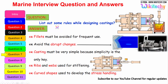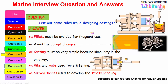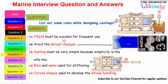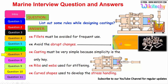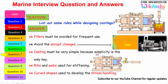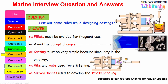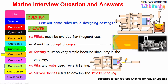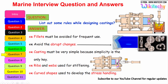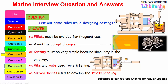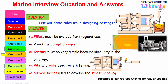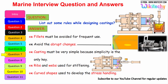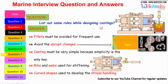Let us see some of the rules to follow while designing castings. Fillets must be avoided for frequent use — that is the first rule. Avoid abrupt changes. Castings must be very simple, because simplicity is the key. Ribs and webs are used for stiffening. The curved shape should be used to develop stress handling — it should be a curved shape to avoid stress concentration. These are all rules we have to follow for castings.